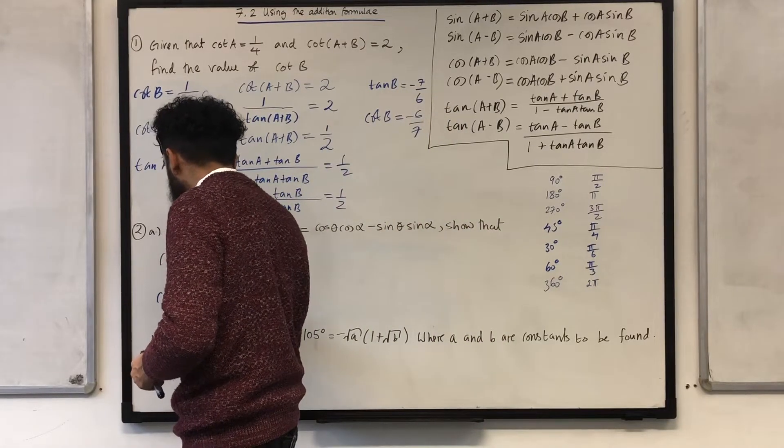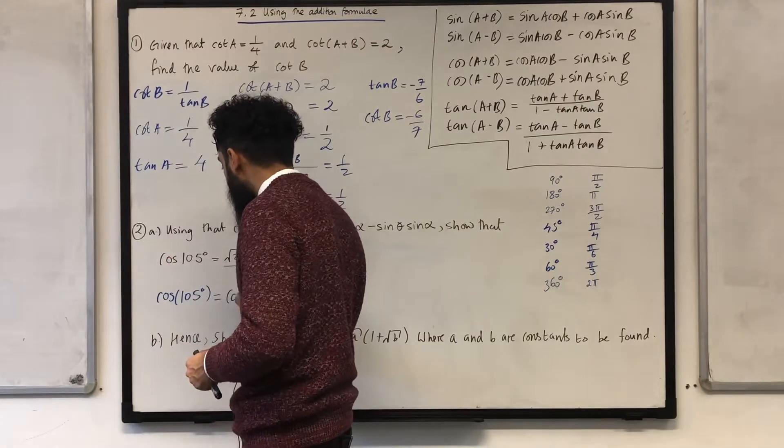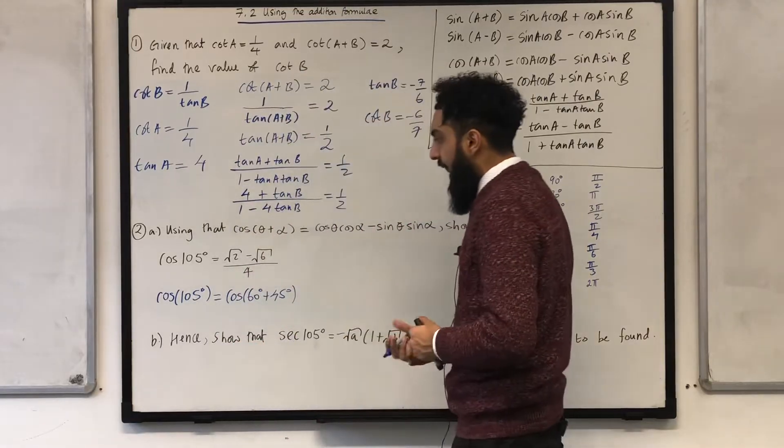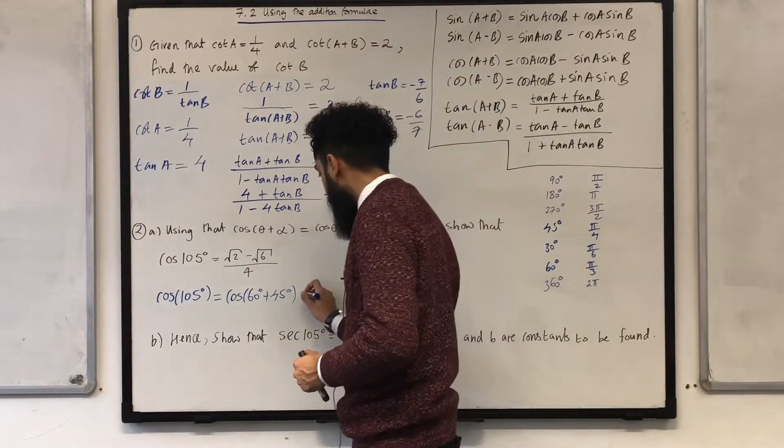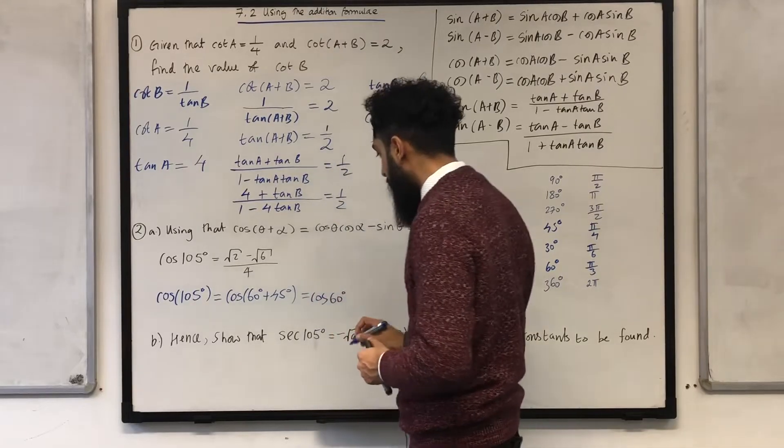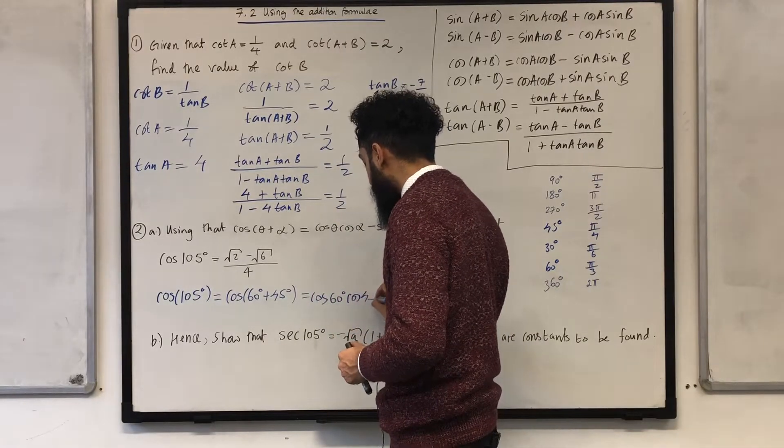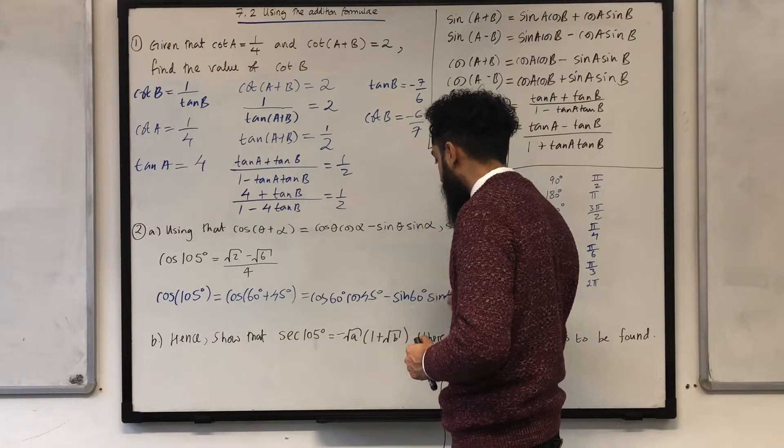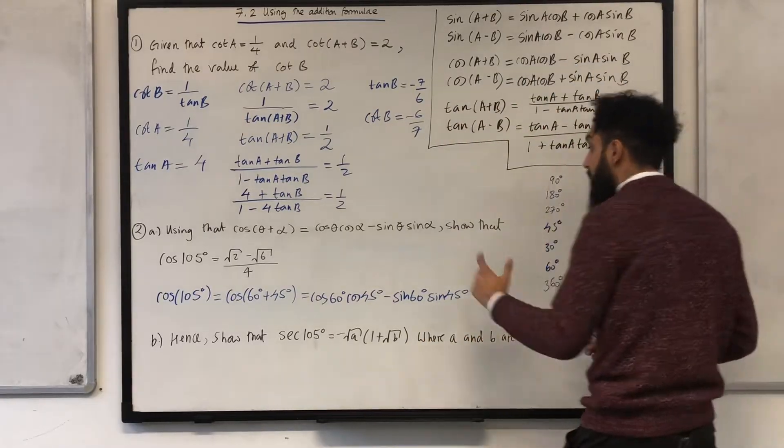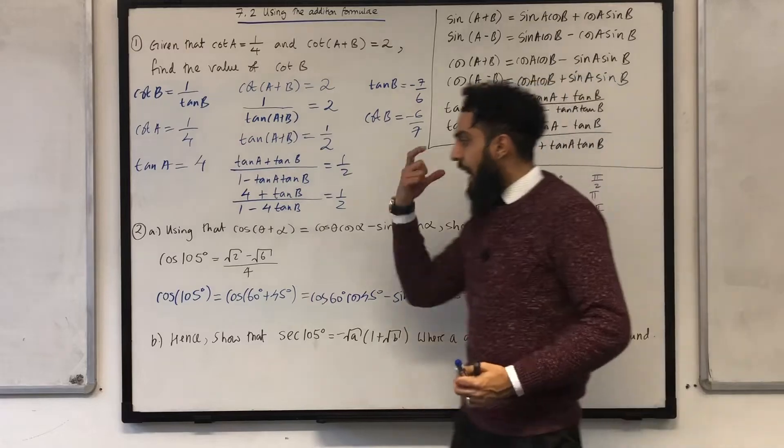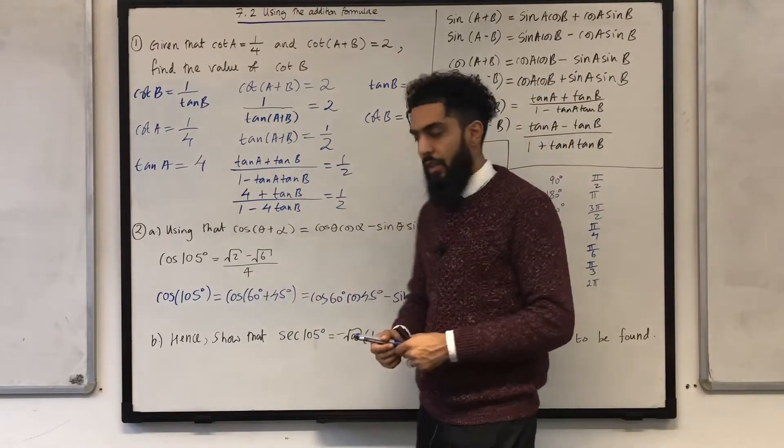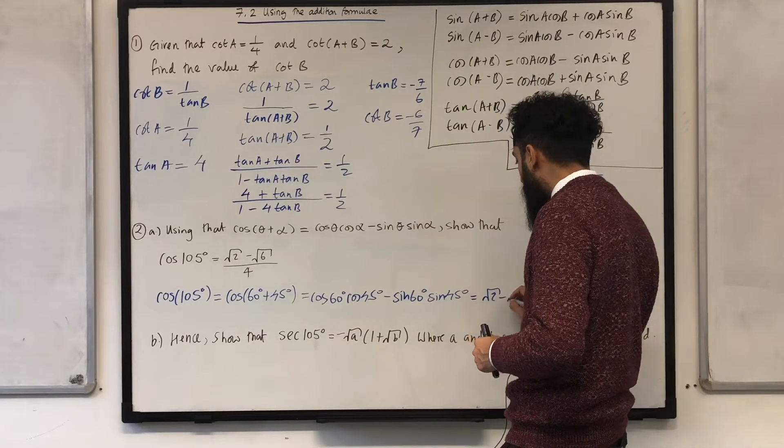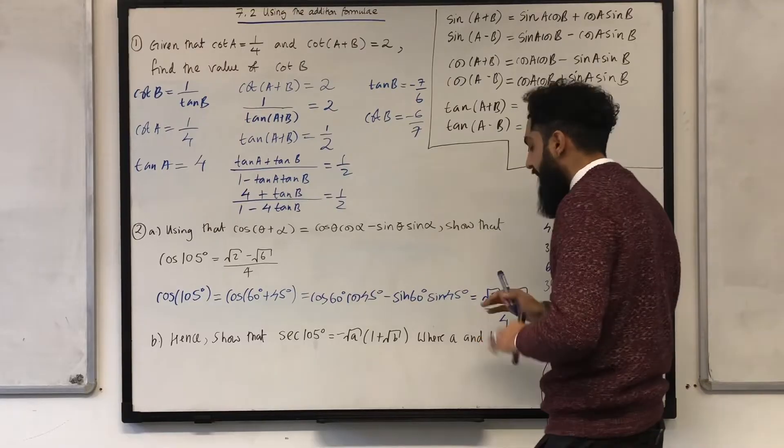Cos 105 degrees can be written as cos 60 degrees plus 45 degrees. Now, I can expand this to give me cos 60 degrees, cos 45 degrees minus sin 60 degrees, sin 45 degrees. All I now need to do is put this into my calculator and I obtain this particular result. Okay. So, that there will be equal to square root 2 minus square root 6 all over 4 as required.